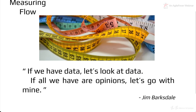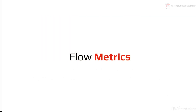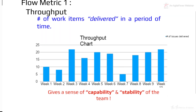Now we come to measuring flow — the crux of why we're here. If you have data, let's look at data. If all we have are opinions, let's go with mine. This is a quote by Jim Barkstead, former CEO of Netscape: if it's factual, let's look at the data. So now let's look at the flow metrics. The first metric is throughput. Everybody knows this one — throughput is simply the number of work items delivered, meaning completed — it has gone into production or reached the customer — in a period of time.